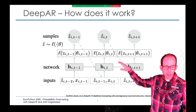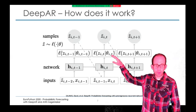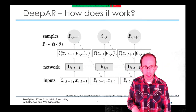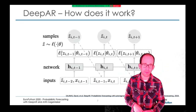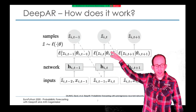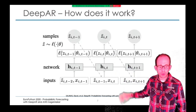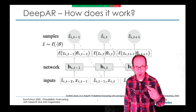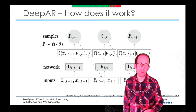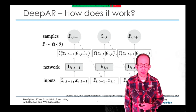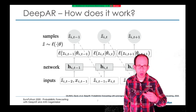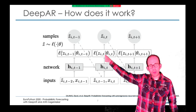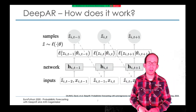We sample from those probability functions — that's basically z, the sample. You can see the dotted line going from z back down to the next input — that's the autoregressive part. The 'AR' in DeepAR stands for autoregressive: you put the sample back as input again.